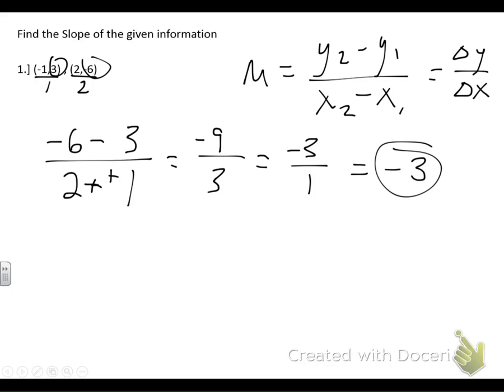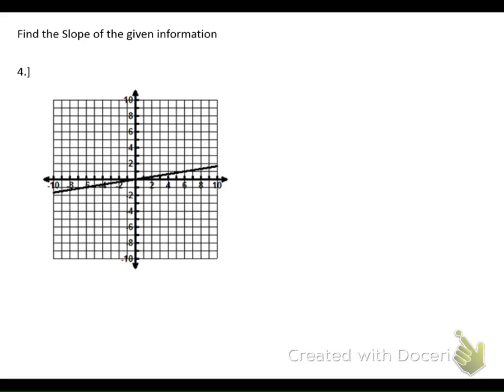Now this negative 3 over 1 right here is important because if I was looking at a graph, that could tell me that my line will go down 3 and right 1 and then down 3 and then right 1. And that would kind of give me my line going down in the graph. And we'll see that here in just a second when I do my graph example. Okay, so that's real quick if they give us 2 points. So let's look at our graph now.